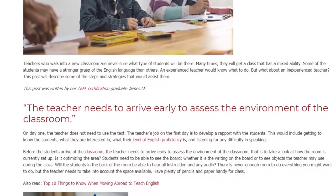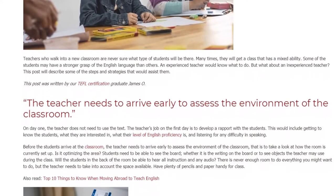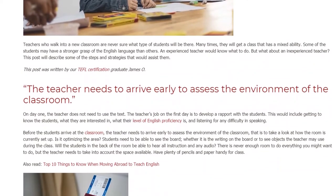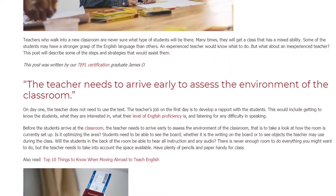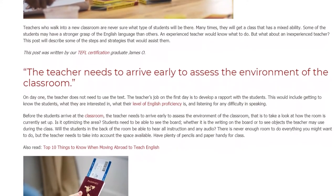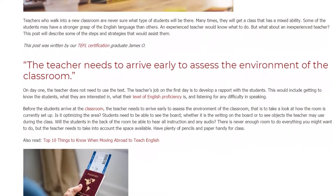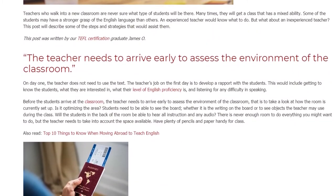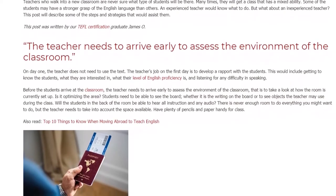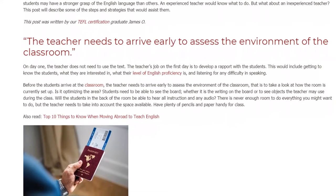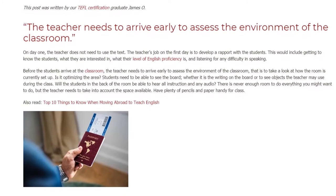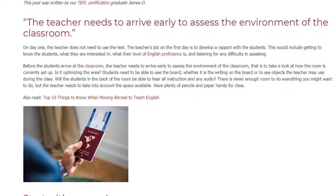Before the students arrive, the teacher needs to assess the environment of the classroom — that is, to look at how the room is currently set up. Is it optimizing the area? Students need to be able to see the board, whether it is writing or objects the teacher may use during class. Will students in the back be able to hear all instruction and any audio? The teacher needs to take into account the space available and have plenty of pencils and paper handy.